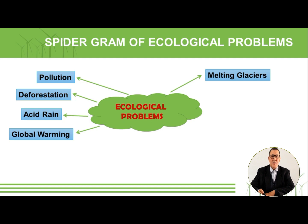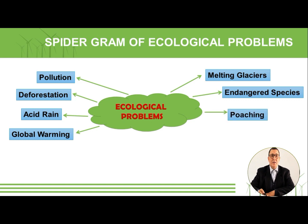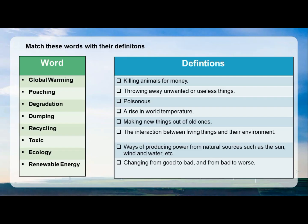Another problem is endangered species — because of the problems that humans cause to the environment, some species disappear and become extinct. There is also poaching — some people massacre and kill animals. And the last one: ozone layer depletion.